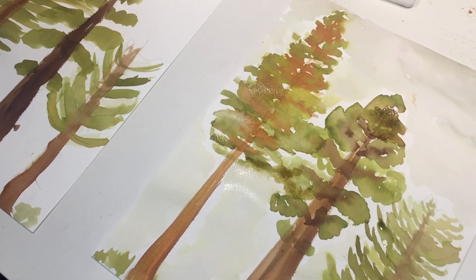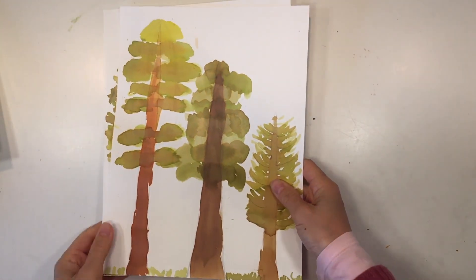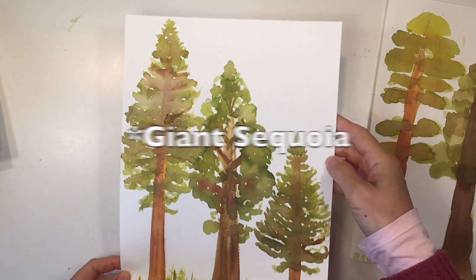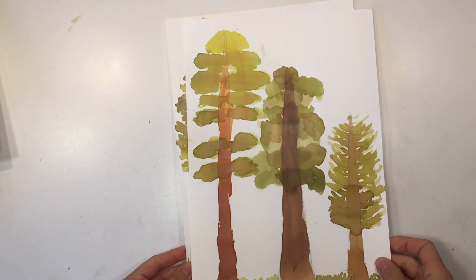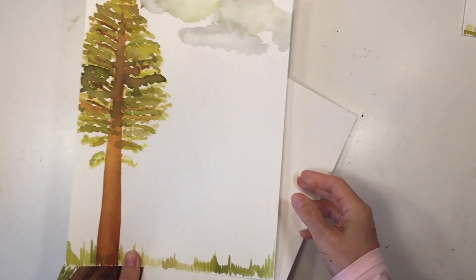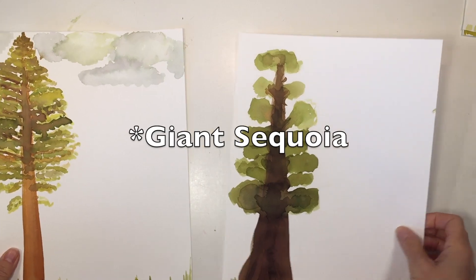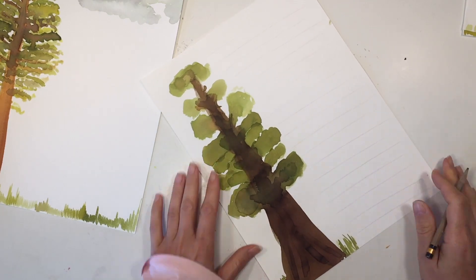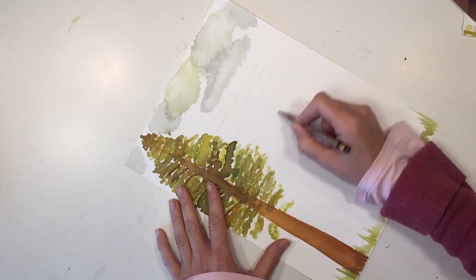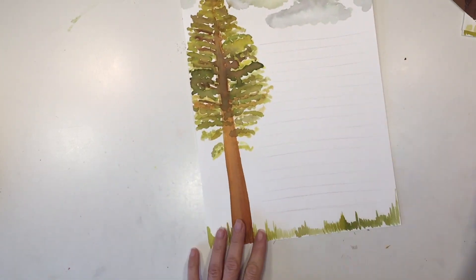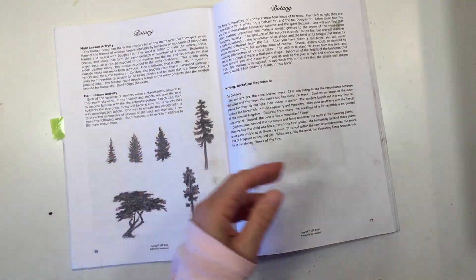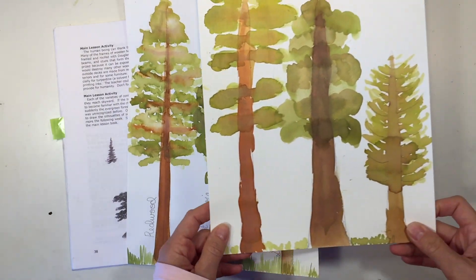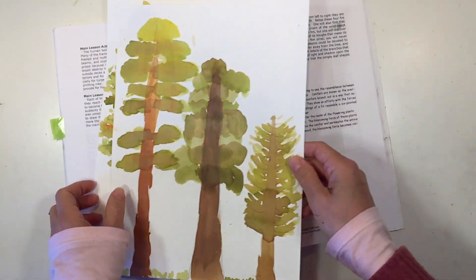These are all dried. We will still include them into our main lesson book. But this is what my son redid after all. It still does not resemble the redwood or the spruce or the Douglas fir perfectly, but that's okay. It's a lot better than his first attempt. We also went ahead and did another tree. He chose the spruce and I chose the redwood. We did that on the side of the page so that we could add lines on the other side for our narration.